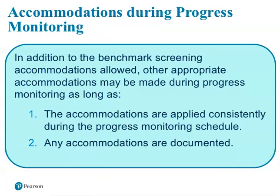During progress monitoring, other appropriate accommodations may be made as long as they are applied consistently each time the measure is administered. Accommodations should be well documented so that it is clear that they were used. It's important to know that a comparison of other students' progress monitoring scores to the national norms may not be appropriate due to these accommodations. Continue on to the specific batteries to learn more about administration and specific scoring rules.